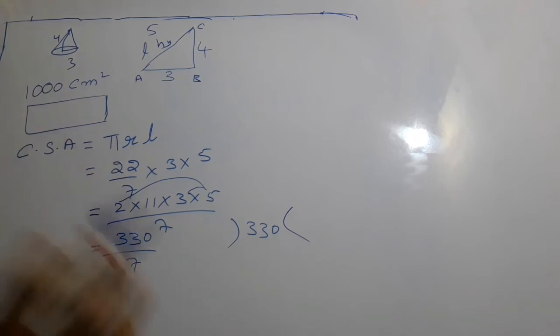Just leave it like this, don't simplify. 330/7 is the curved surface area of a cone. So one cap requires 330/7 square centimeters of paper sheet.